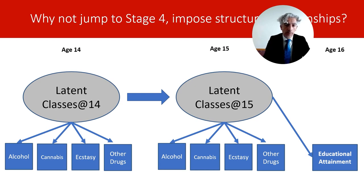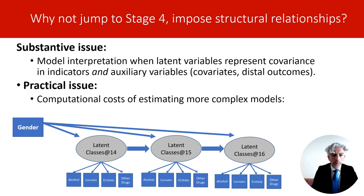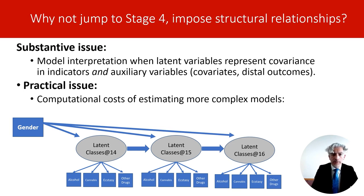The same problem arises when we include covariates in the latent class and latent transition models. It may not be advisable to estimate the measurement model in parallel with the structural relationships, because problems arise as soon as other variables are included — substantive problems in interpreting what we are actually measuring, and practical problems that become apparent as soon as we have more time points, more complex models, and models that are quite time consuming to estimate.